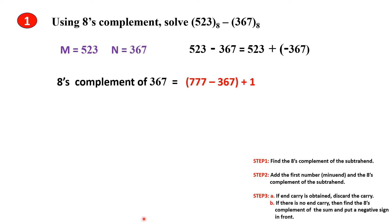The 8's Complement of 367: first find the 7's Complement, then add 1. So, 777 minus 367 gives the 7's Complement, which is 410. Then add 1 to get the 8's Complement: 411. So 411 is the 8's Complement of 367.